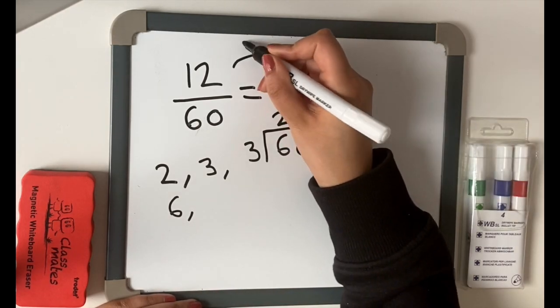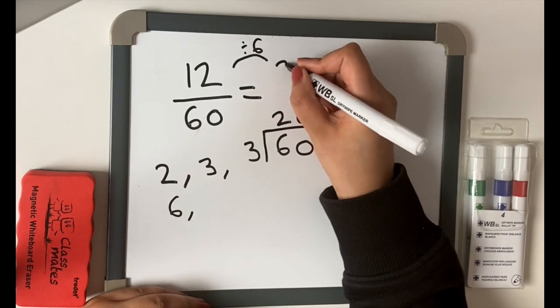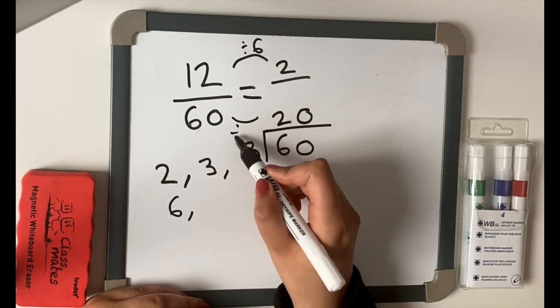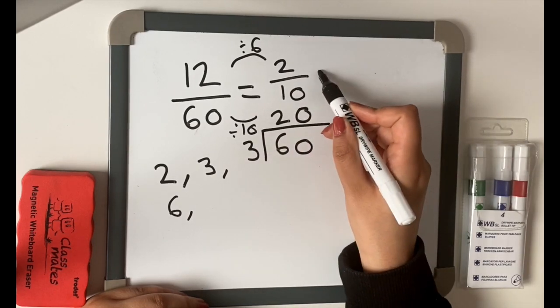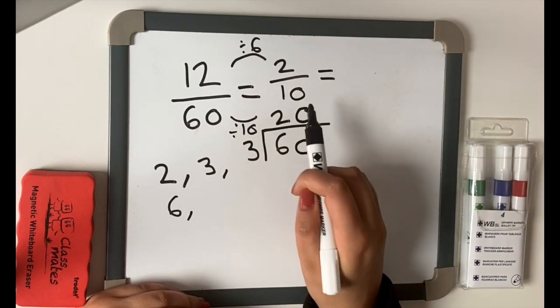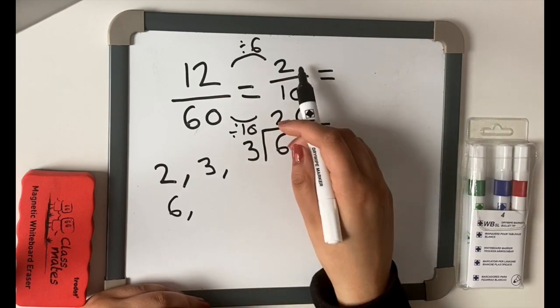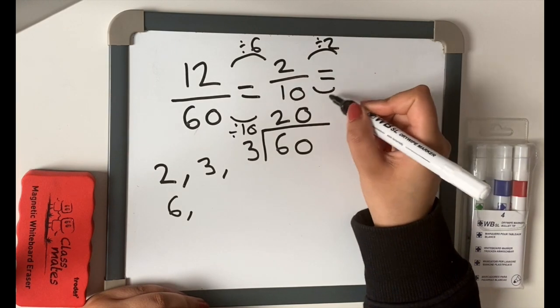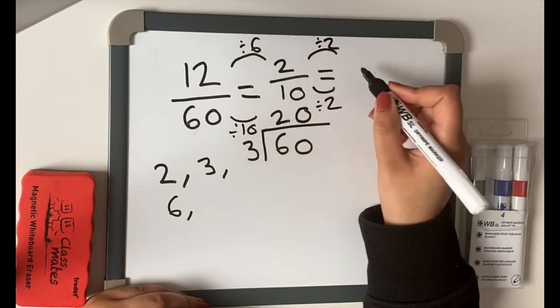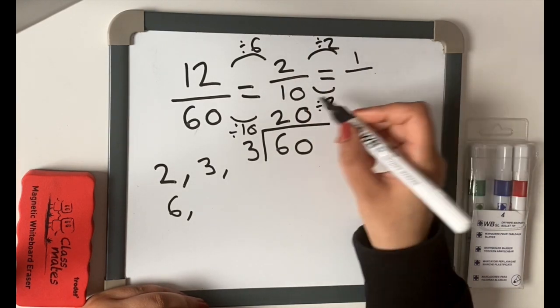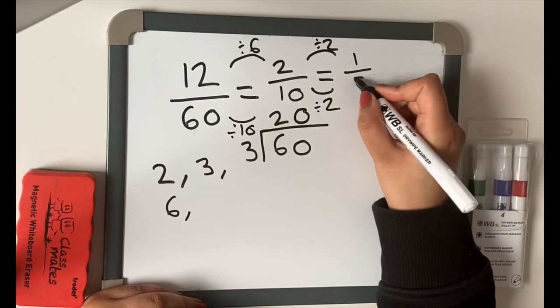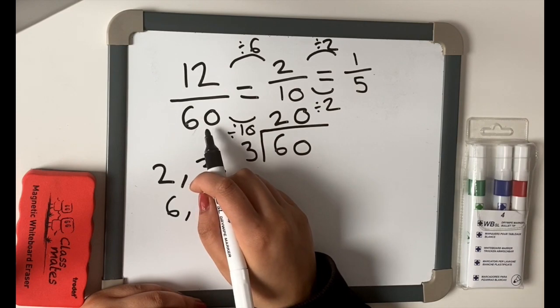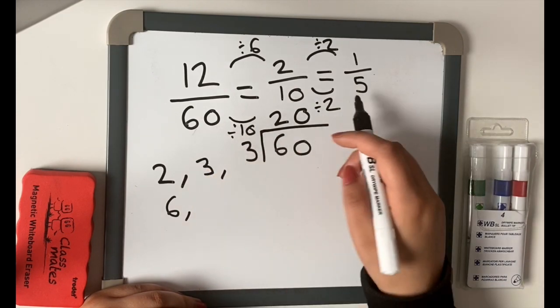12 divided by 6, 6, 12, which is 2. And what did we say was 60 divided by 6? We said it was 10. But I'm pretty sure we can still simplify that because they are both even numbers. Let's divide it by 2 for both sides. 2 divided by 2 equals 1, 10 divided by 2 equals 5. So our simplest form from 12 over 60, 12 sixtieths, is actually a fifth.